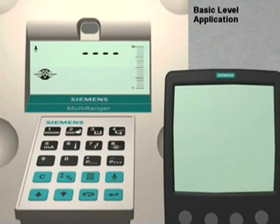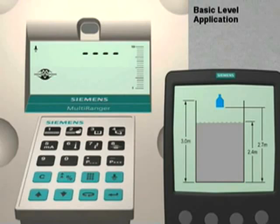We are going to set up a simple level application using the seven quick start parameters. For our application, we are going to use a multi-ranger to measure the level of liquid in a 3 meter high storage vessel.